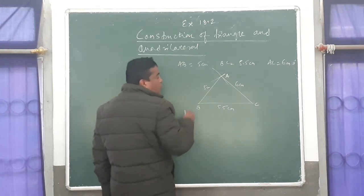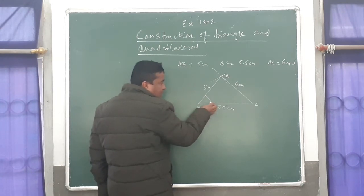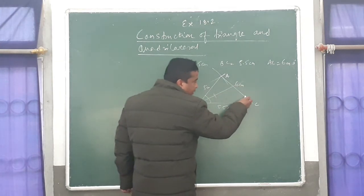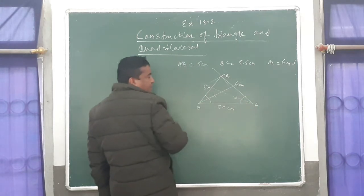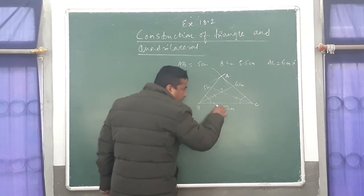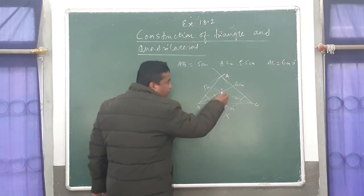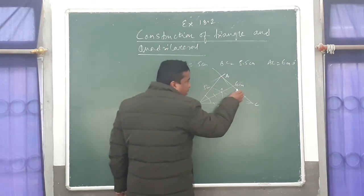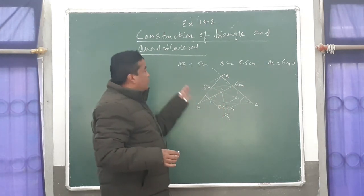Now you have to construct the incircle. To construct the incircle, all the processes are the same — you have to bisect any two angles. I am bisecting angle B: draw one arc, then from the two points draw further arcs. This intersection is point O. From this point take a slightly longer radius and draw an arc, then from here and from here join it. From this point take the radius and draw a circle. This is called the incircle, which is important and more difficult compared to the circumcircle.